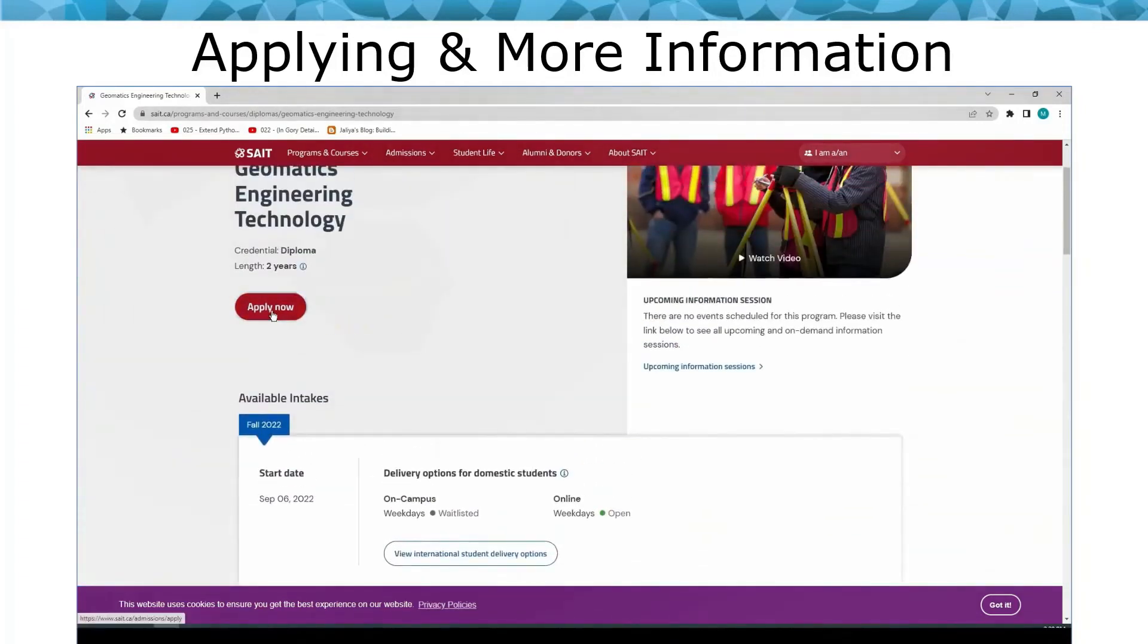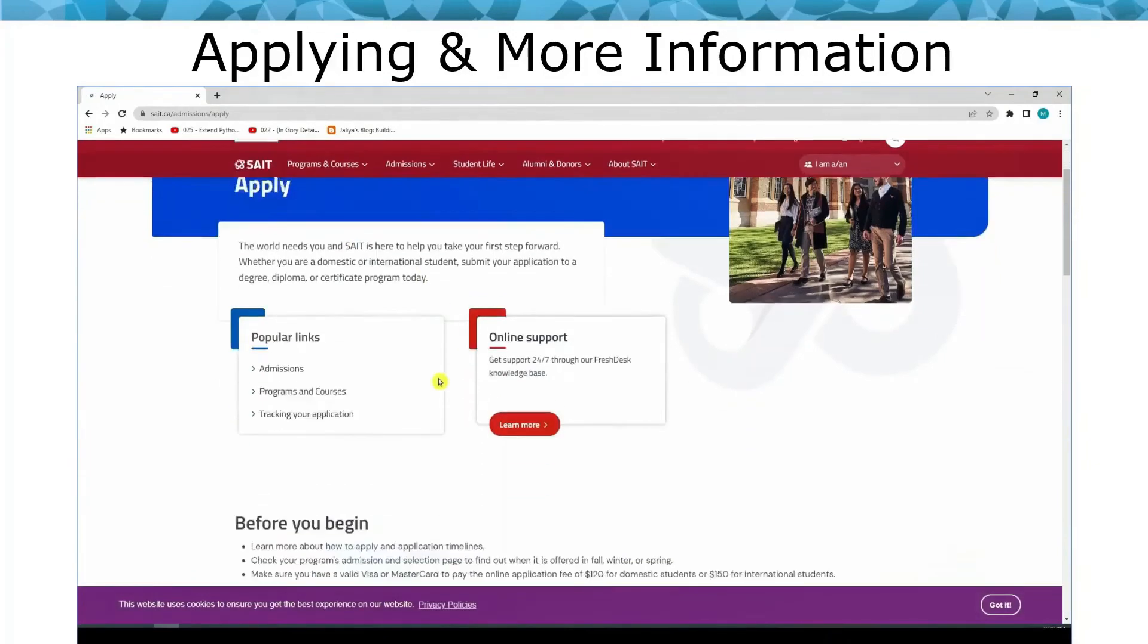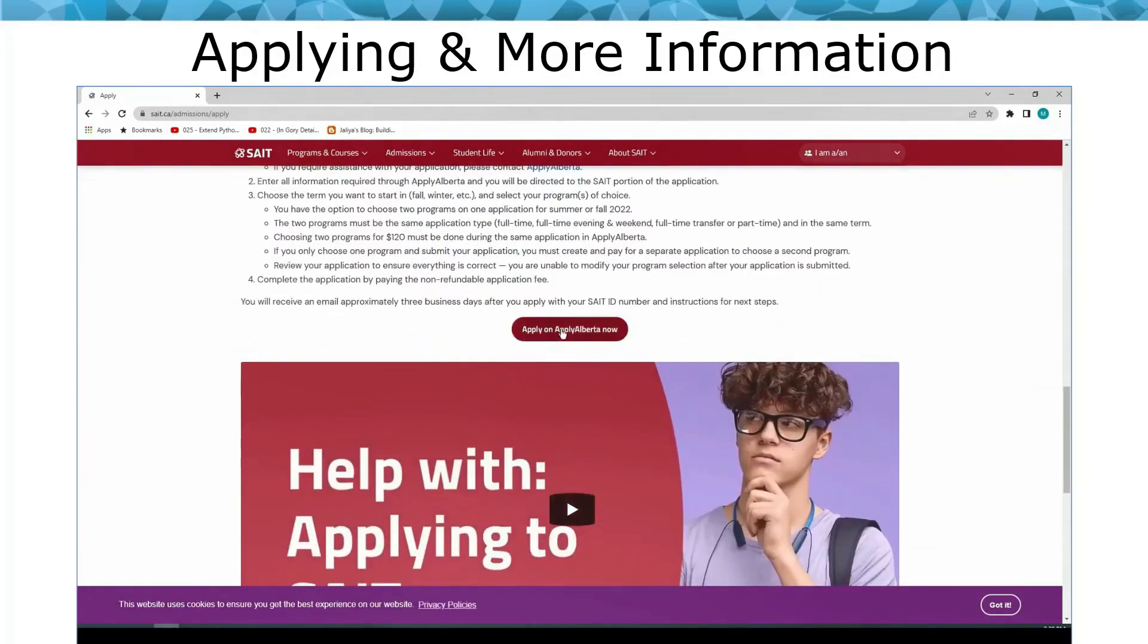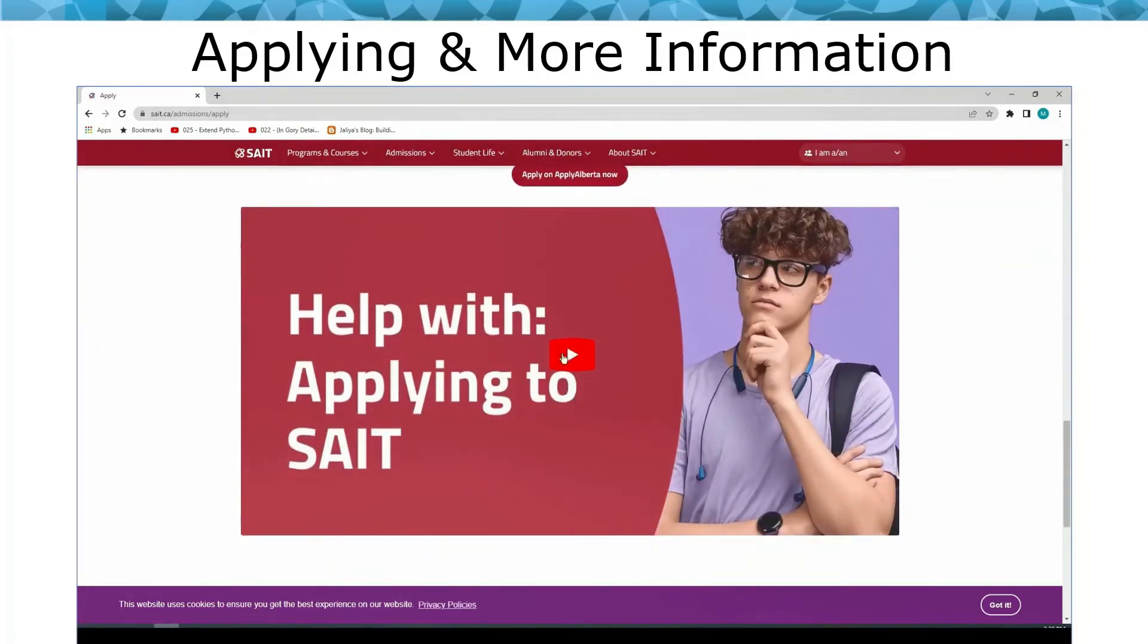To apply, click Apply Now. It will take you to a different page, click Apply through Apply Alberta, and there's a video to walk you through the application process.